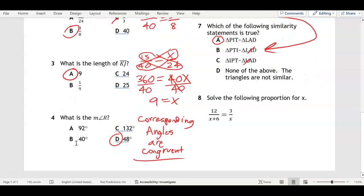Last but not least, number eight: solve the following proportion. You should be able to cross multiply and divide. So 12 times X is 12X equals, and then you got 3 times X plus 6, so 3 parentheses X plus 6. Then you can distribute: 3 times X is 3X, 3 times 6 is 18. Bring down 12X.